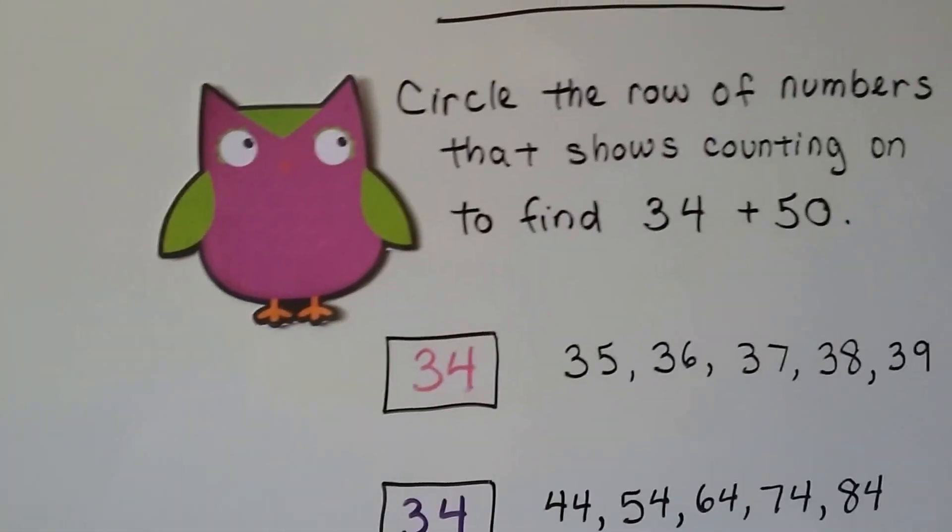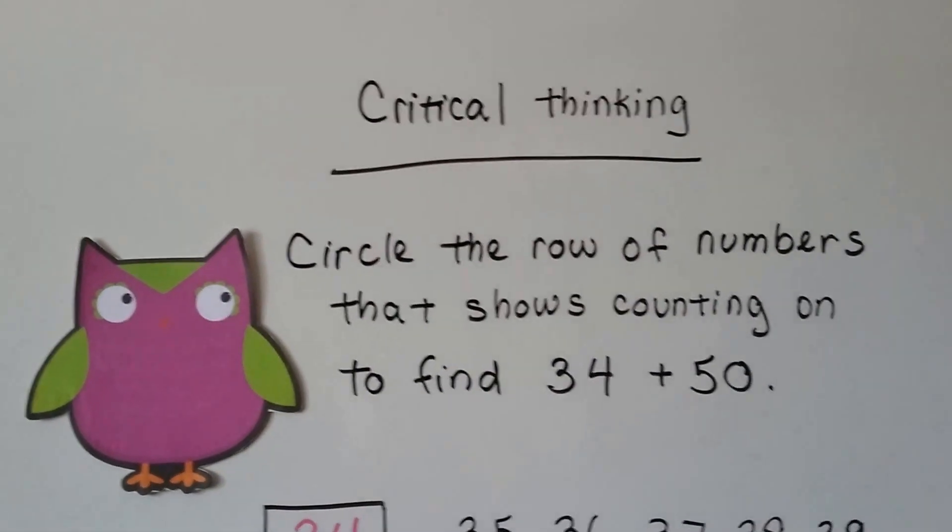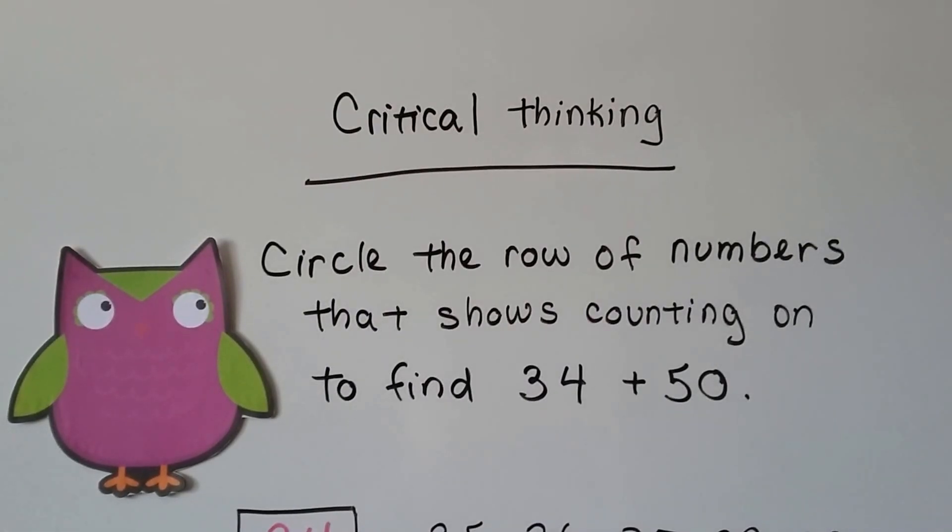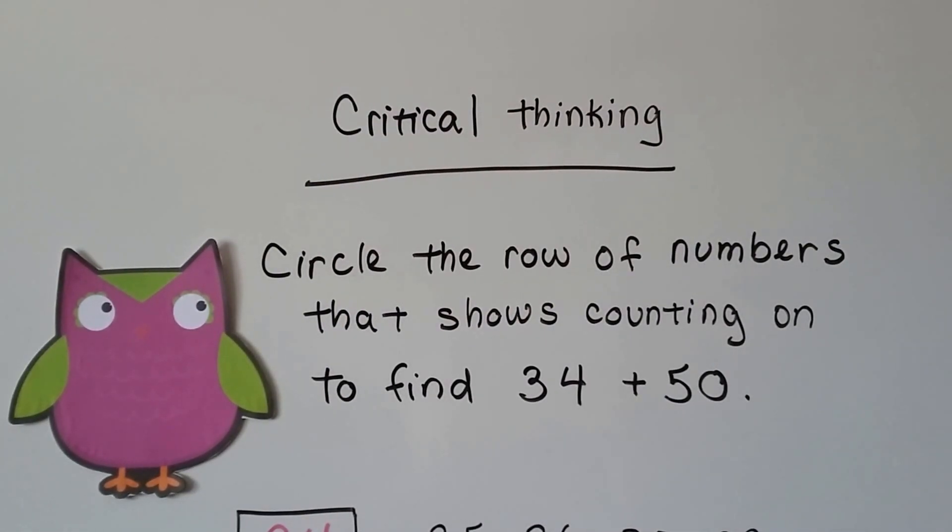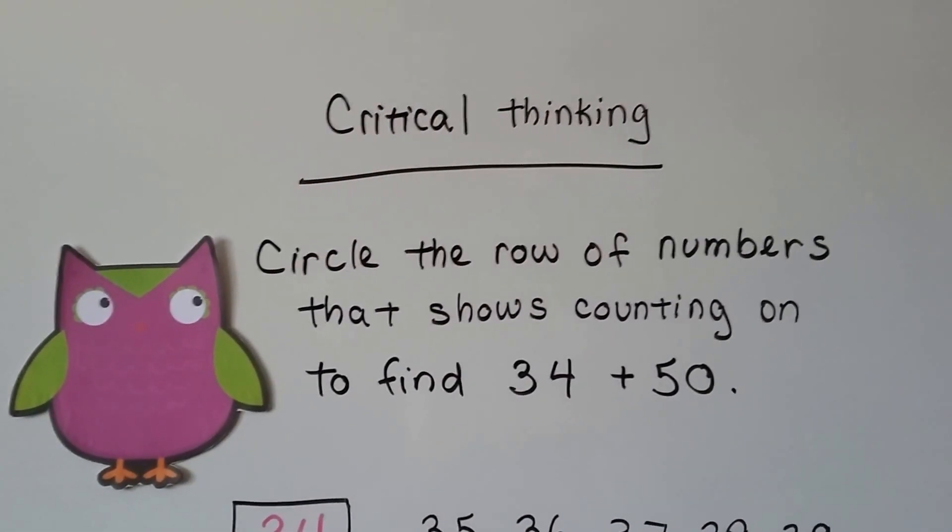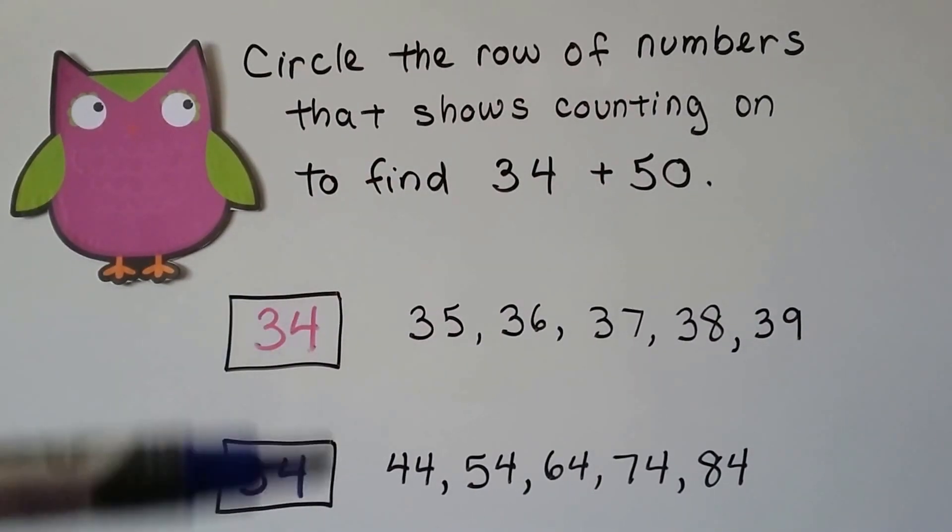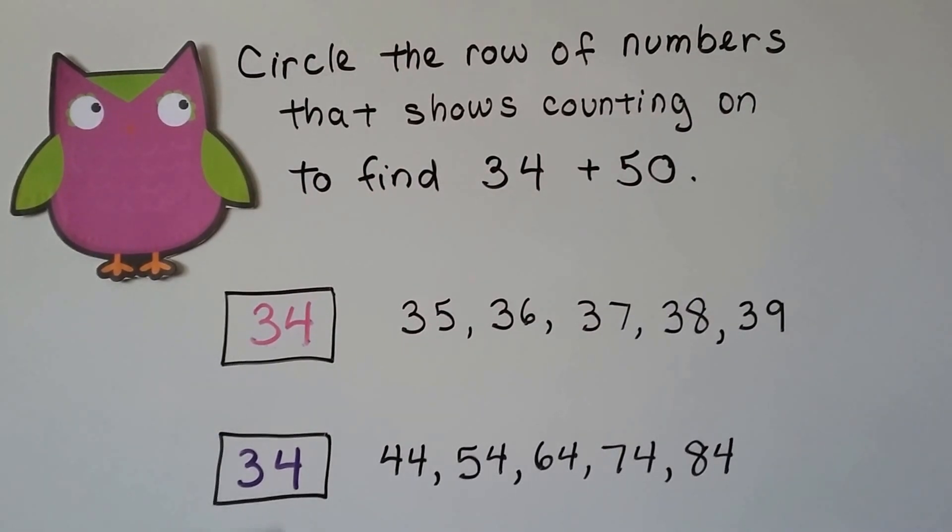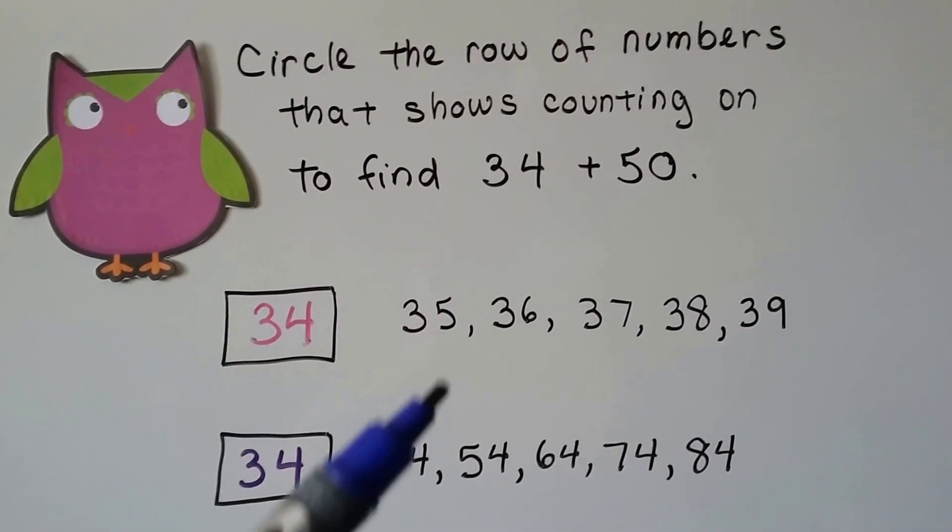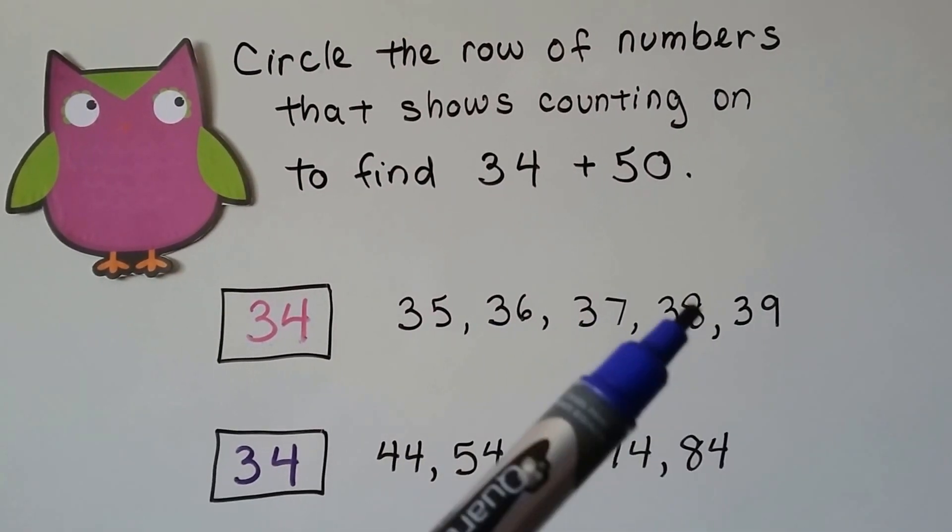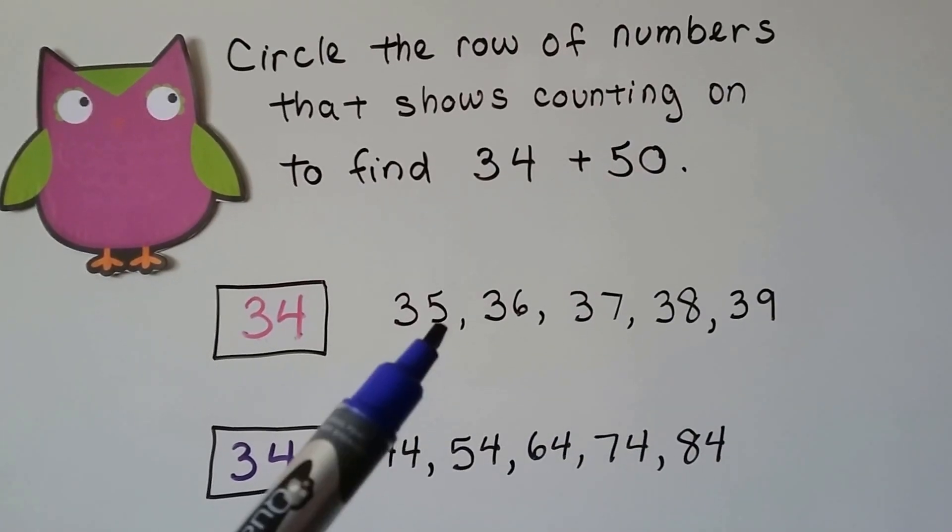Now let's see if we can answer this one. It says, circle the row of numbers that shows counting on to find 34 plus 50. So which one of these shows 34 plus 50? We've got 34, 35, 36, 37, 38, 39. So that added 5.